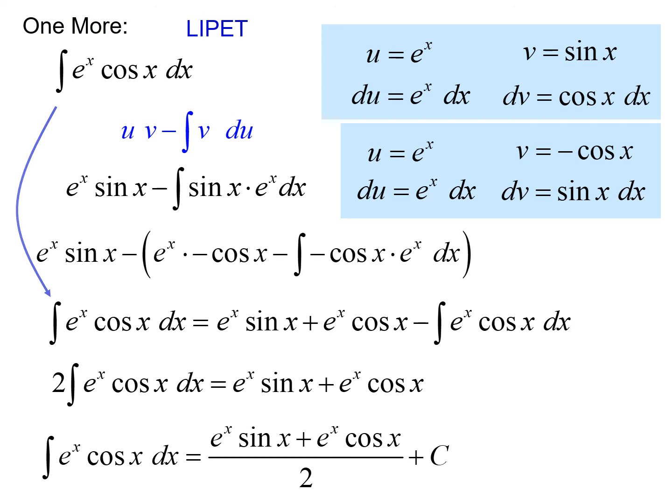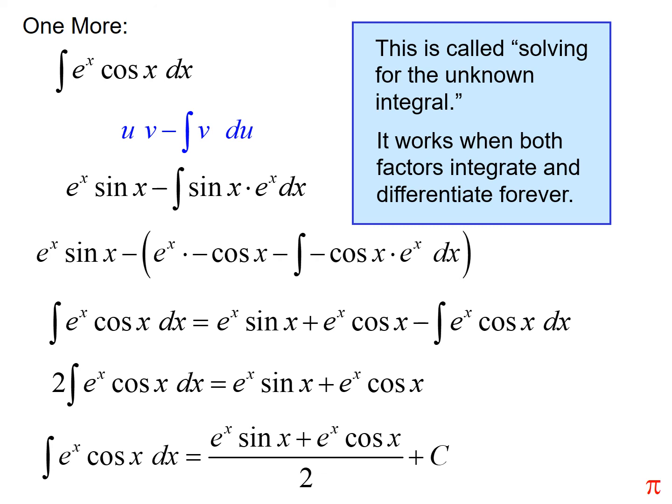This is a special method of using the integration by parts formula known as solving for the unknown integral. So if you have something like an exponential and a trig function where you know you can keep taking those derivatives and you just kind of keep going around and around and around, if you ever end up where you have the integral that you started with in your solution, you can move it over to the left hand side and then divide by a constant.